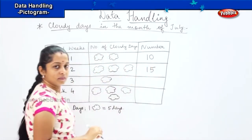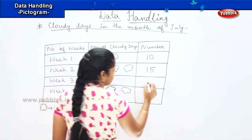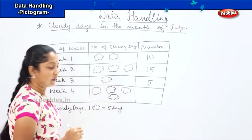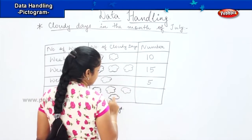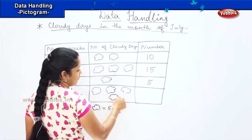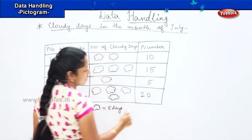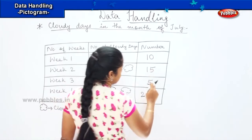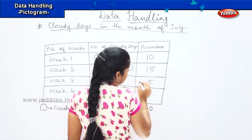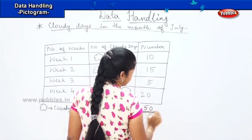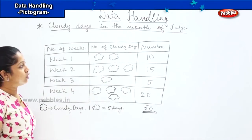The next row shows one, two, three, and four clouds — which means five, ten, fifteen, and twenty. So week three has twenty cloudy days. Now shall we count the total? Adding the clouds: week one has 2, week two has 3, week three has 1, and week four has 4 — giving a total of 10 clouds, representing fifty cloudy days in the month of July.